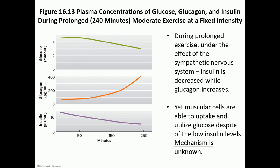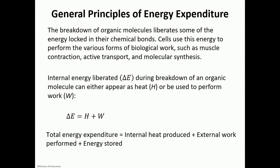We know the effect of exercise on hormones — increased sympathetic stimulation leads to increased epinephrine, increased glucagon, and decreased insulin levels. But we don't yet have an explanation for how the body maintains that constant glucose level and how skeletal muscles continue taking up and utilizing glucose despite low insulin. We're going to move on now to something we do know: the general principles of energy expenditure — caloric intake versus caloric output.